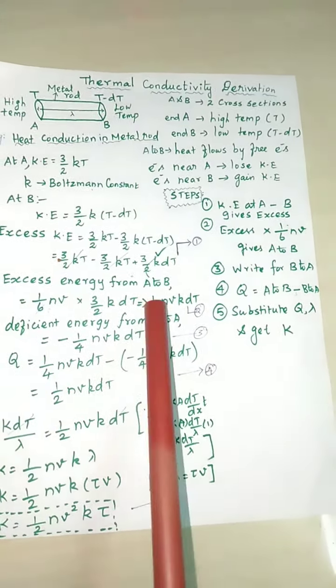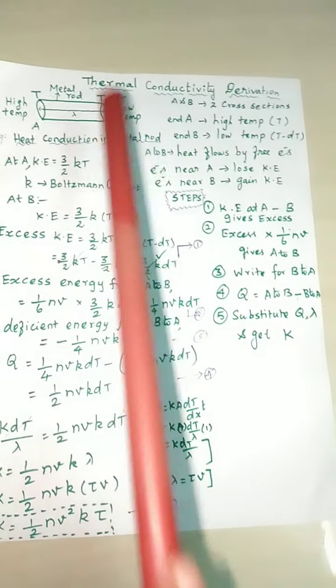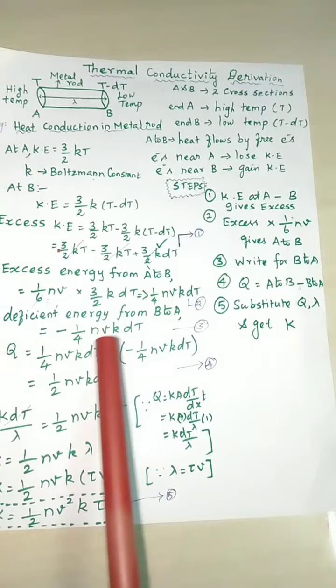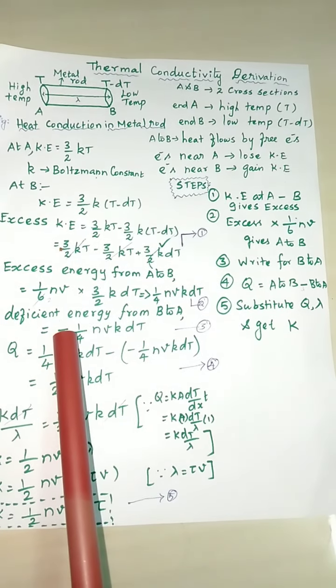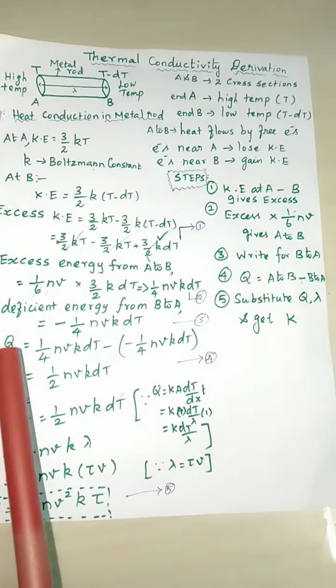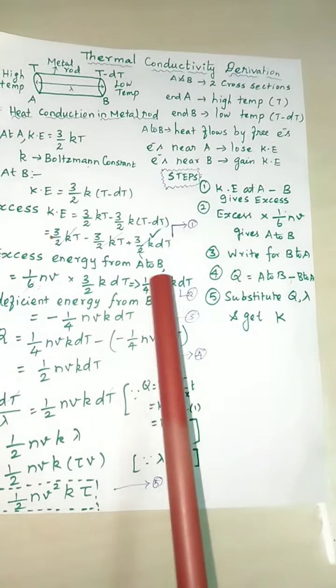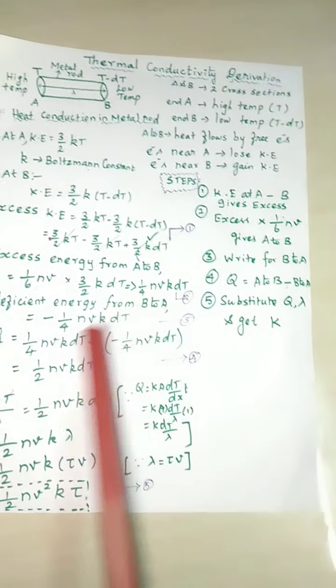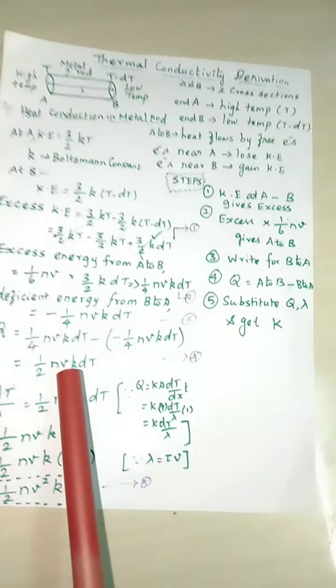The deficient energy from B to A. Now we found only A to B, here we have to find B to A. The final term will be in the opposite direction, so we have to put minus. Amount of heat energy Q - that's nothing but A to B minus B to A.